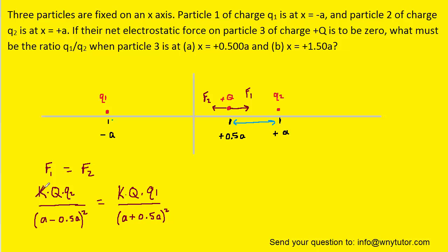Now looking at this equation, we'll notice that the Coulomb constant can divide out, as can the charge capital Q. So we can simplify it. Next, we can simplify the A minus half A and the A plus half A. We can then square the denominators, and since A squared appears on both sides, we can divide it out.